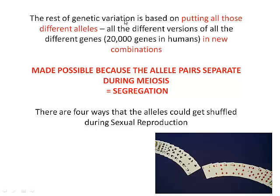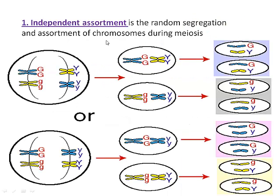The rest of genetic variation is simply based on putting all those different alleles — all the different versions of the different genes — into new combinations. It's made possible because those allele pairs, the big B and little b, separate during meiosis or segregate. There are four main ways that alleles can get shuffled around during sexual reproduction. Firstly, independent assortment: when during meiosis the homologous chromosomes line up beside each other, how the next pair lines up is totally independent of what these guys did. So they pair up accurately with their homologous pair but the orientation could be either way.